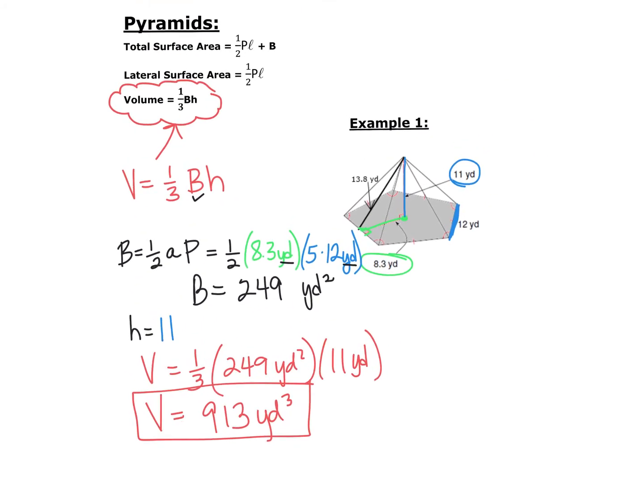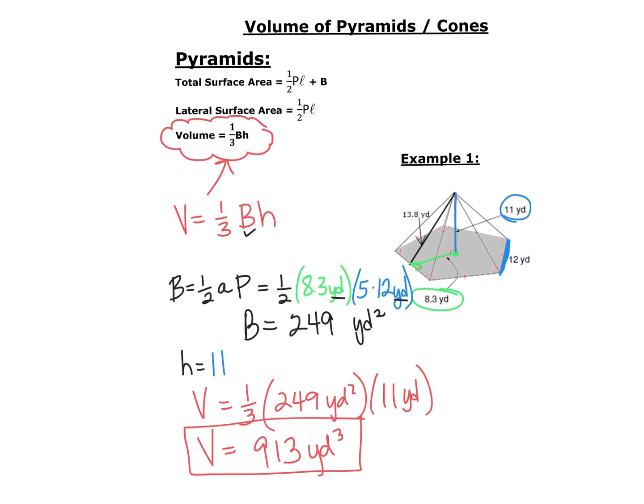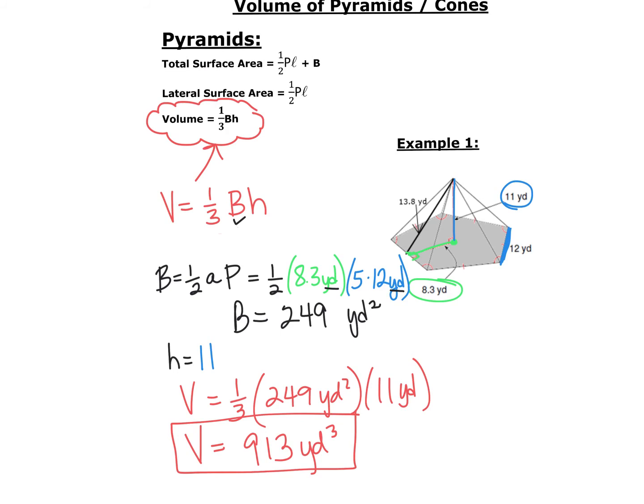So basically when you need to find the volume, you're going to find the area of your base and the height of your pyramid and multiply them together divided by three, or multiplied by one-third. So one-third the area of the base times the height of the pyramid.